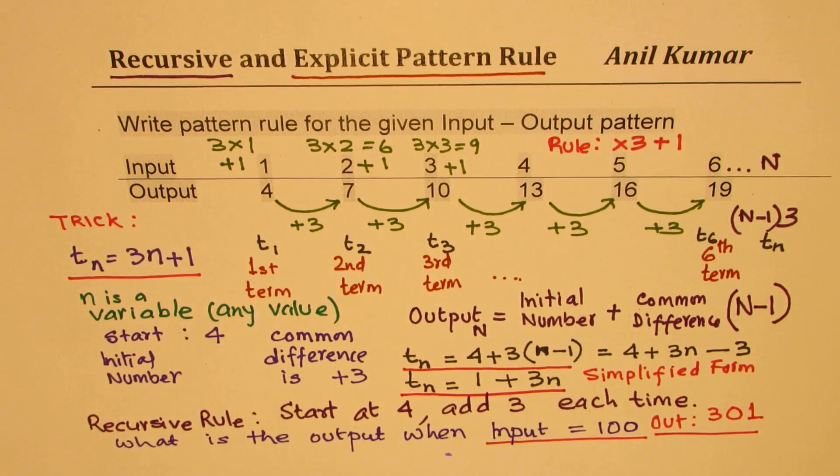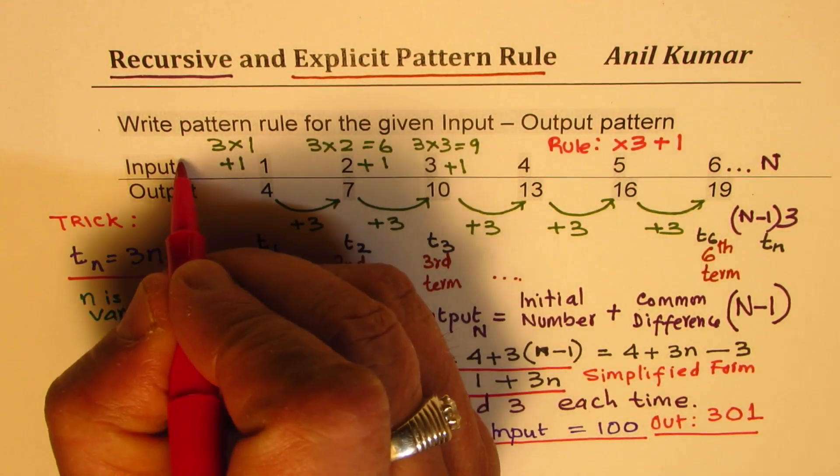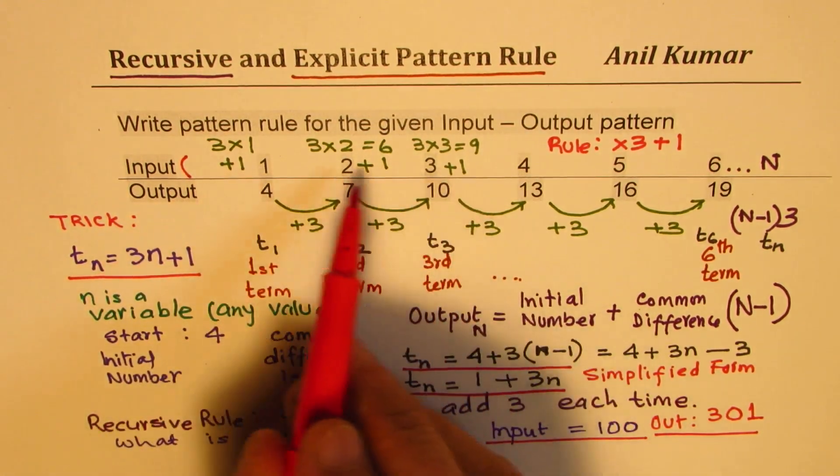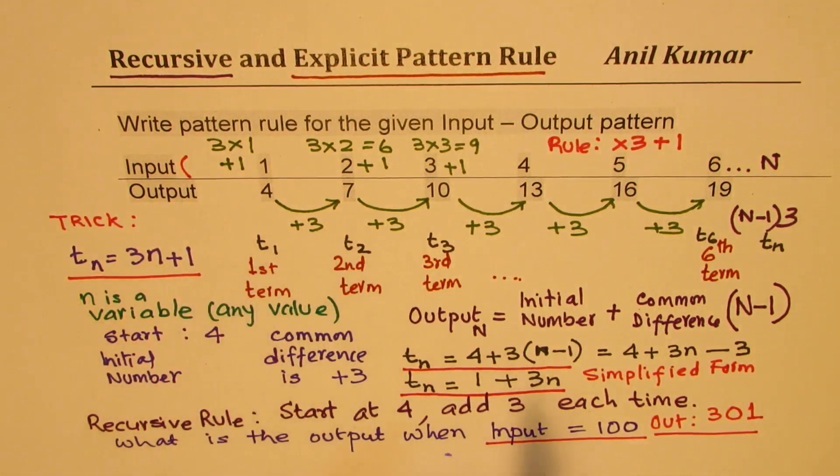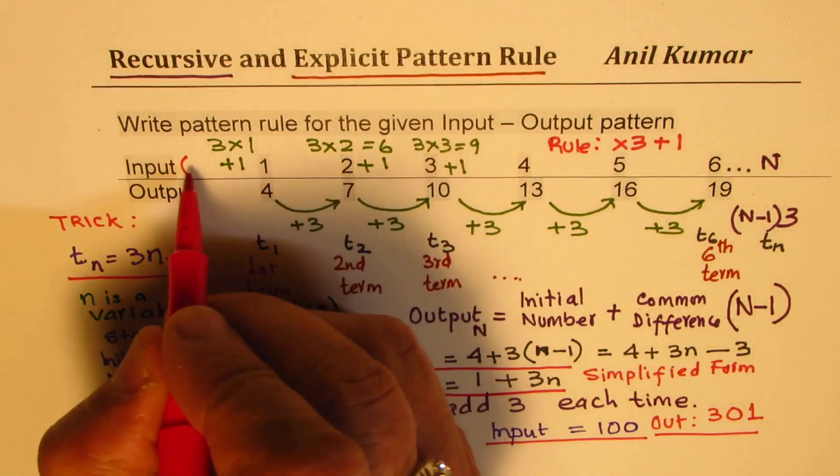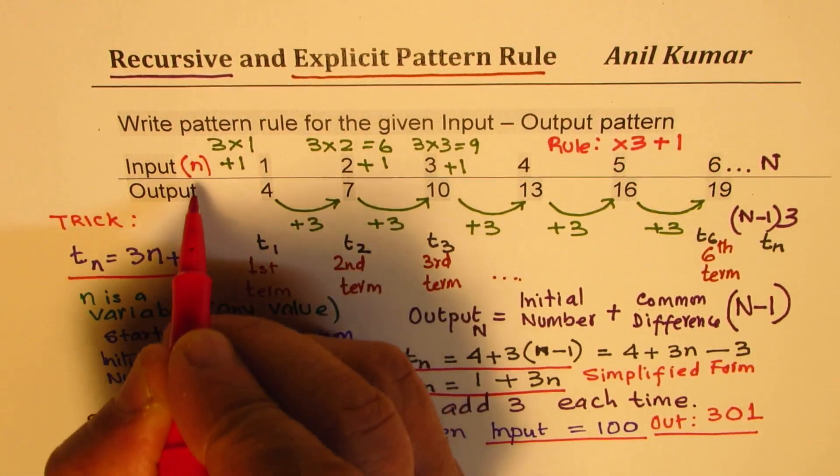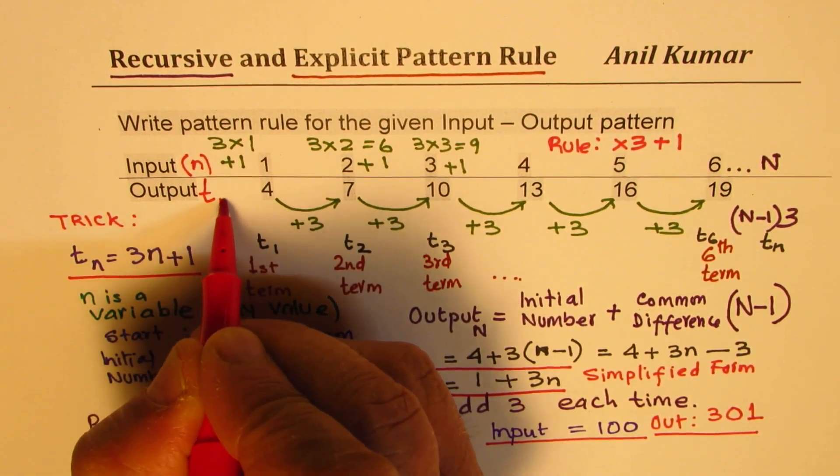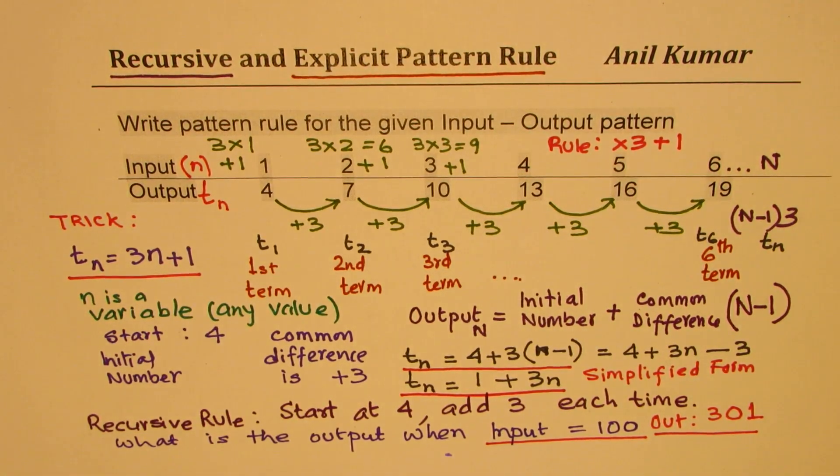So, in our case, inputs will decide the output. The input here is n. The output is tn. You can think like this also. So, in different ways, I've tried to explain you this particular topic, recursive and explicit.